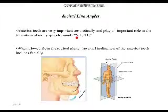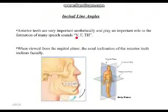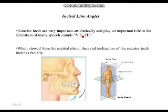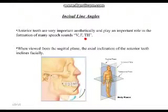Try producing sounds like 'F', 'V', or 'TH' and notice how your anterior teeth are involved. With the 'F' sound, your lower lip tucks in to the maxillary anteriors. With 'TH', your tongue is stuck between the maxillary and mandibular anteriors. If those teeth are missing, you wouldn't be able to produce these sounds. Anterior teeth also begin the digestive process and support the shape of the lips.